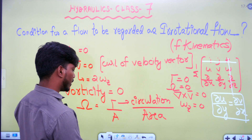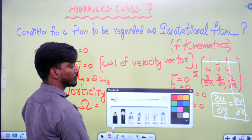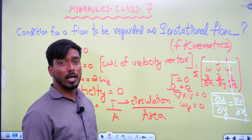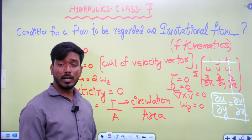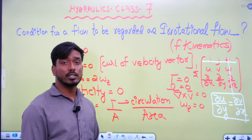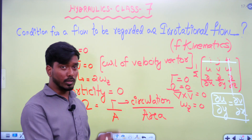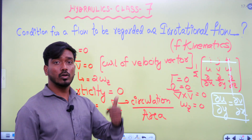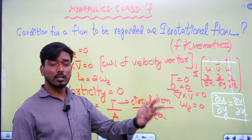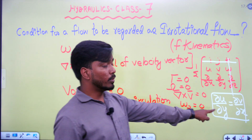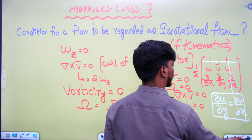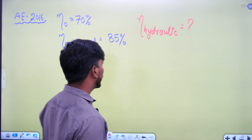To summarize the conditions for irrotational flow: angular velocity equals zero, curl of velocity vector equals zero, vorticity equals zero, circulation equals zero, and ∂u/∂y equals ∂v/∂x. Now let's look at the next question: the relation between overall efficiency, mechanical efficiency, and hydraulic efficiency.